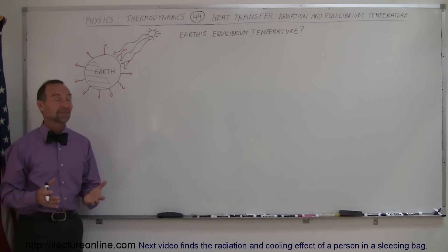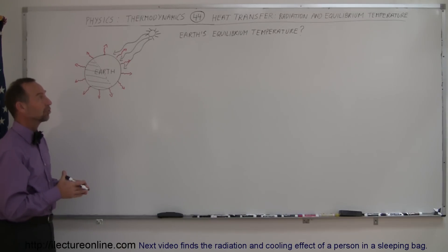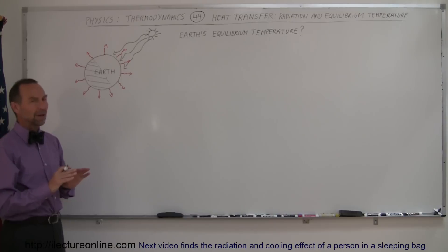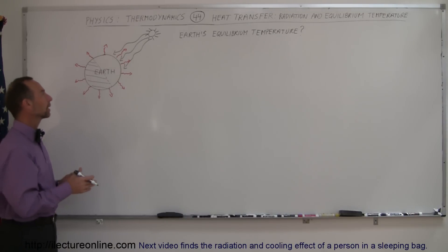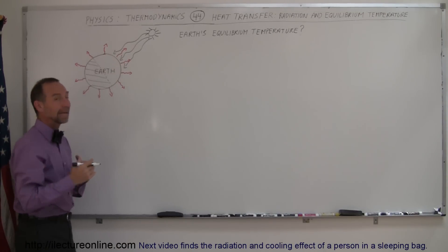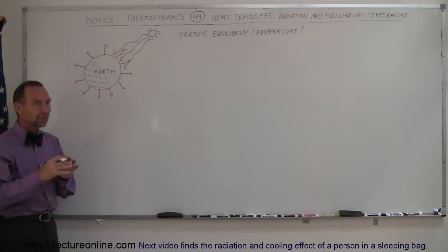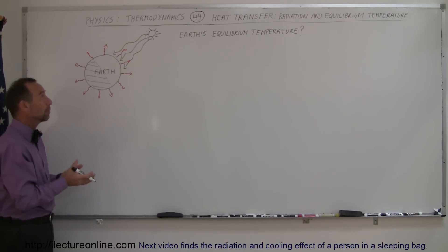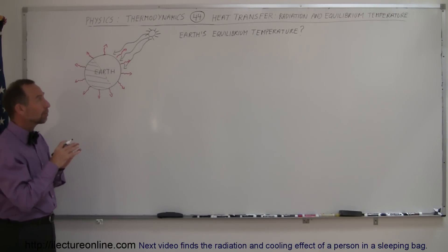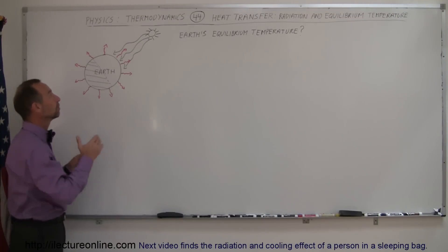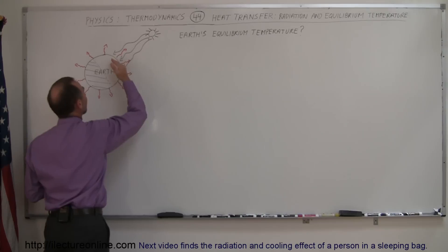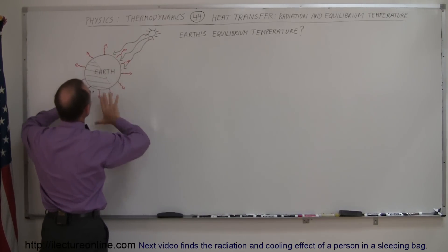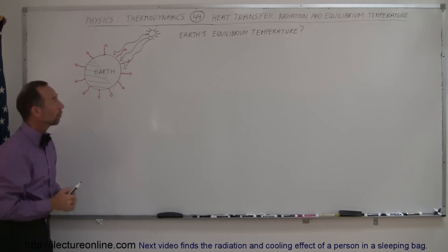Welcome to iElectronLine and our next example on heat transfer through radiation. We're going to talk about the Earth's equilibrium temperature. We have to oversimplify the model because the Earth does have an atmosphere that tends to retain heat. But if we ignore that aspect, what would the temperature of the Earth be if we simply look at it from a simple perspective of radiation — the Sun shining onto the Earth, the Earth receiving energy from the Sun, and then that energy being re-radiated out in all directions into the Universe?